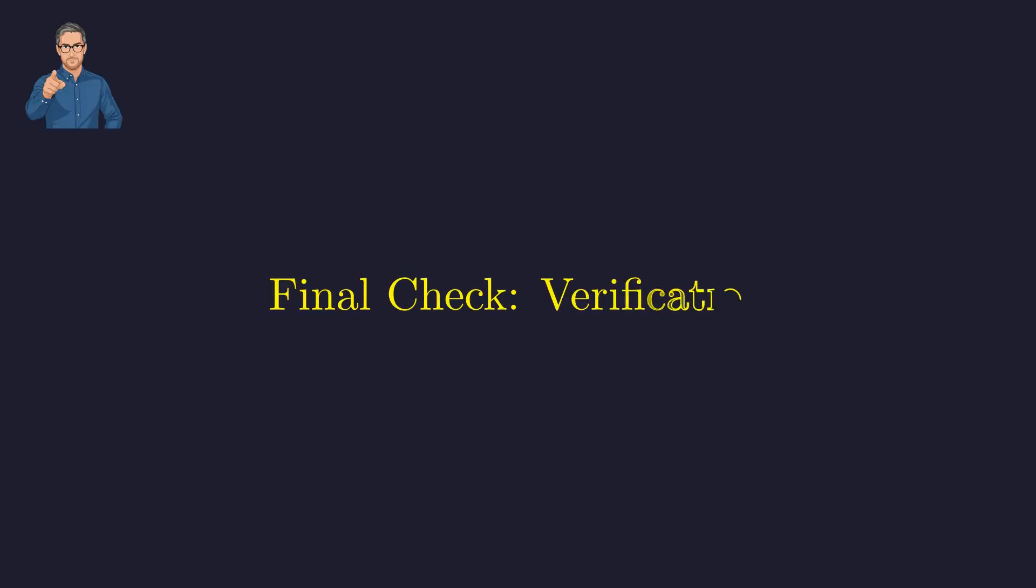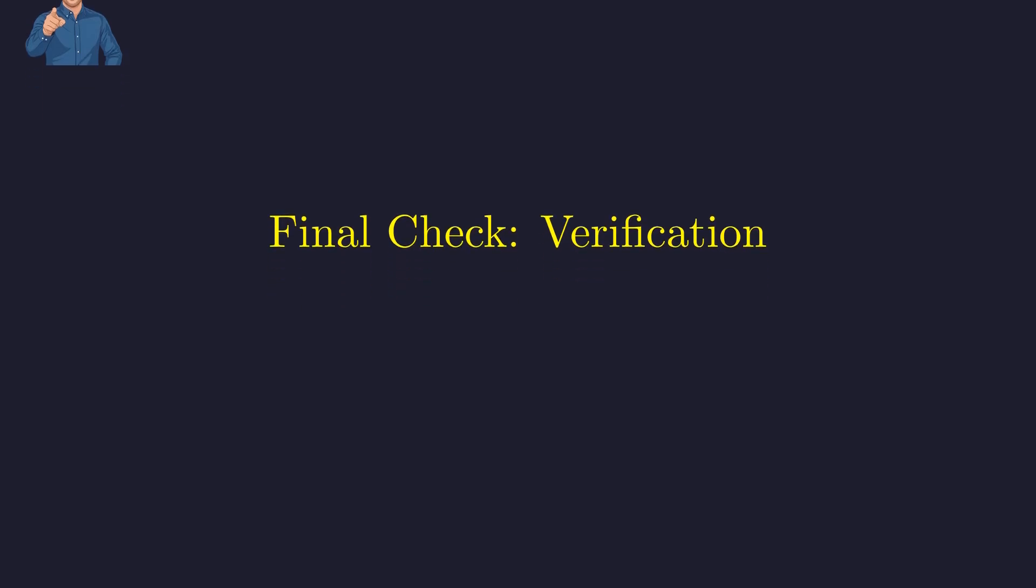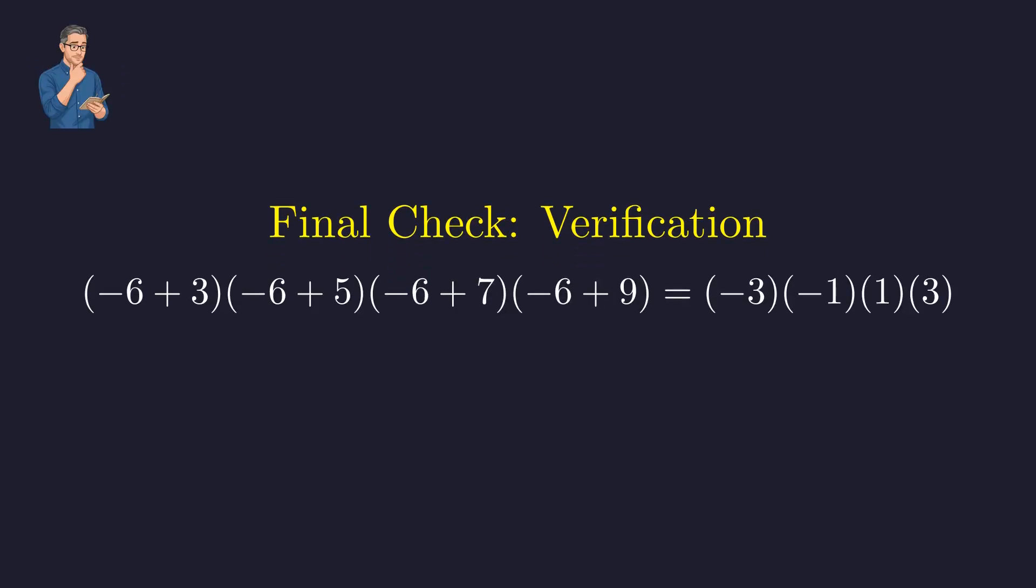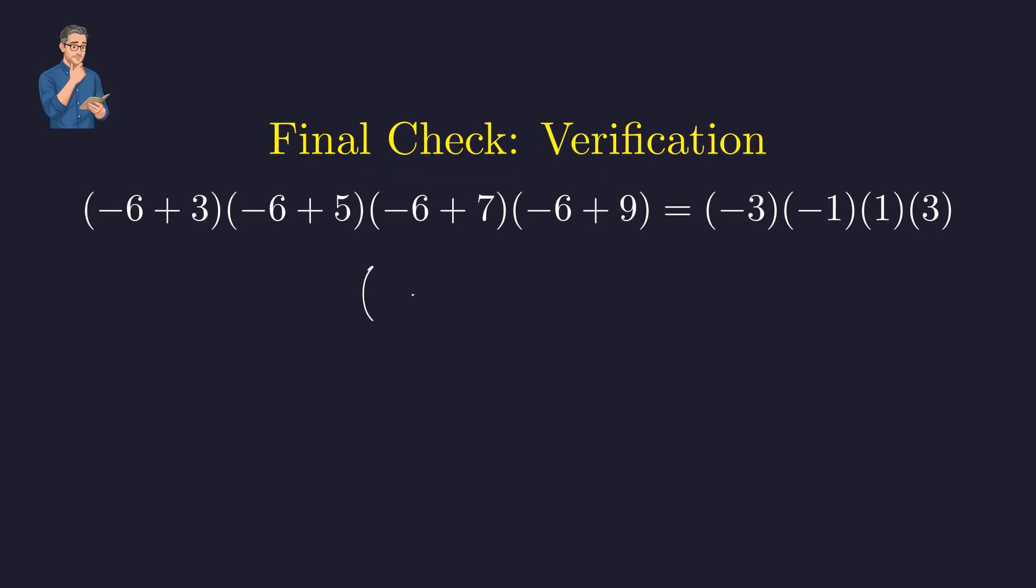As a final step, we verify our solution. Let's check x = -6. Plugging -6 into the original expression simplifies each factor. Multiplying the first two terms gives positive 3.